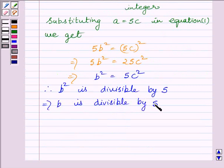This is because if prime number P divides A square, then P divides A, where A is any positive integer.